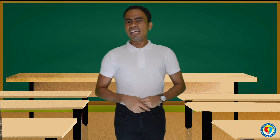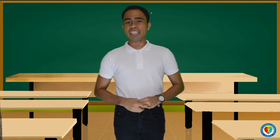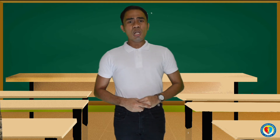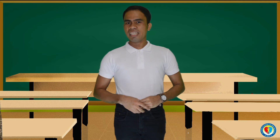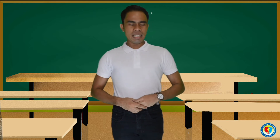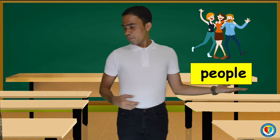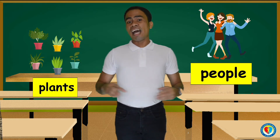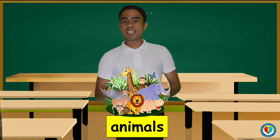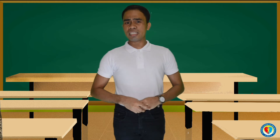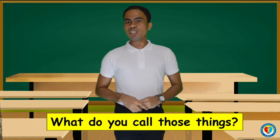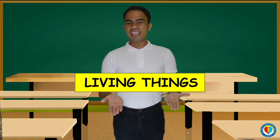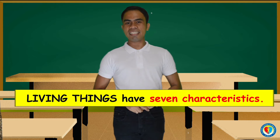Are you ready to learn? Did you know that our world is made up of a variety of things? Look around you. What do you see? You may see people, plants, and even animals. What do you call those things? They are called living things. And living things have seven characteristics.